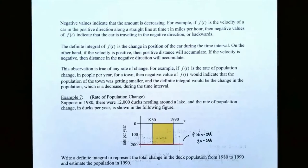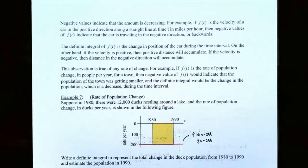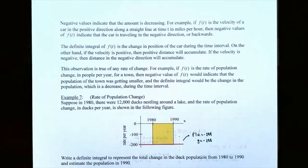Negative values indicate a decreasing quantity. For example, if f of t represents the velocity of a car, negative values of f of t indicate the car is traveling in the negative direction. The definite integral of f of t gives the change in position. This applies to any rate of change: if f of t represents a rate of population change, a negative value indicates the population was decreasing, and the definite integral gives the total change.